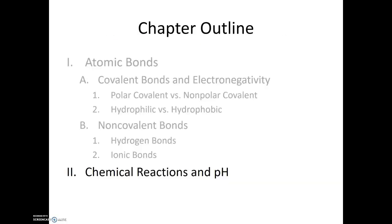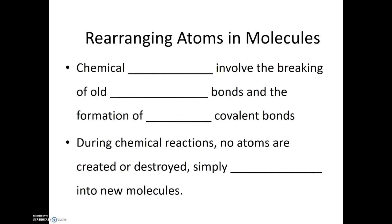The last topic we'll discuss this chapter is the concept of chemical reactions and pH. Chemical reactions involve the breaking of old covalent bonds and the formation of new covalent bonds. During chemical reactions, no atoms are created or destroyed. They're simply rearranged into new molecules.